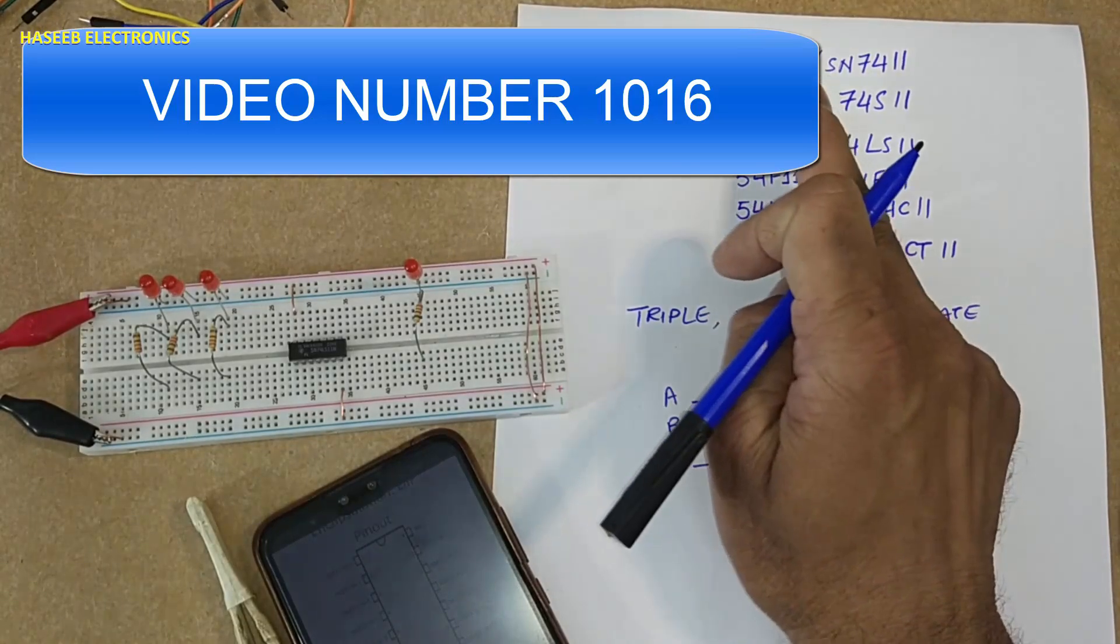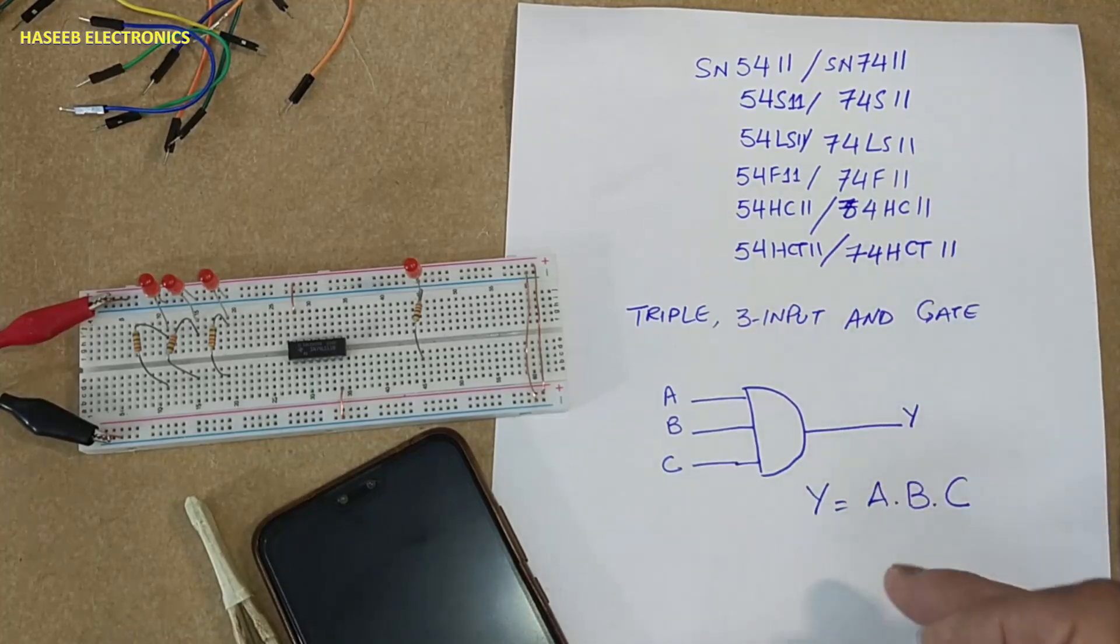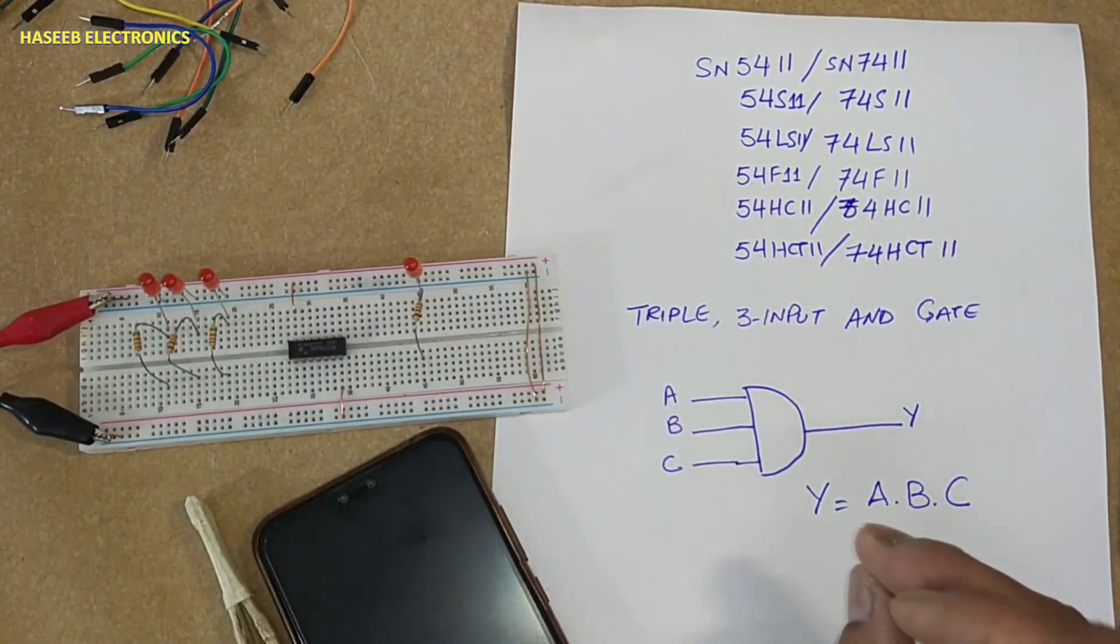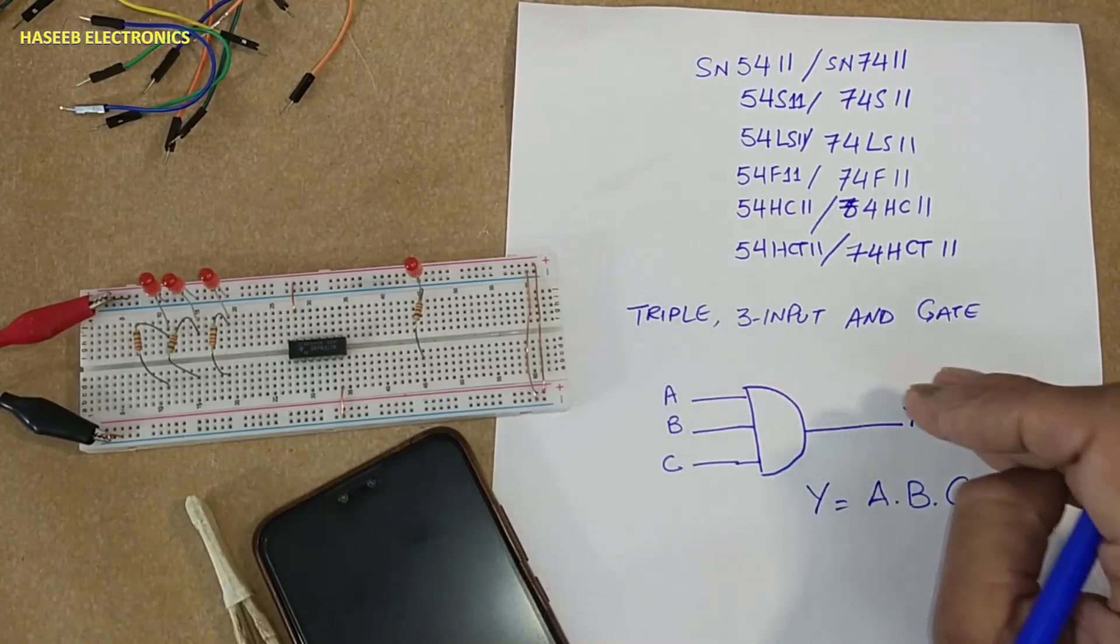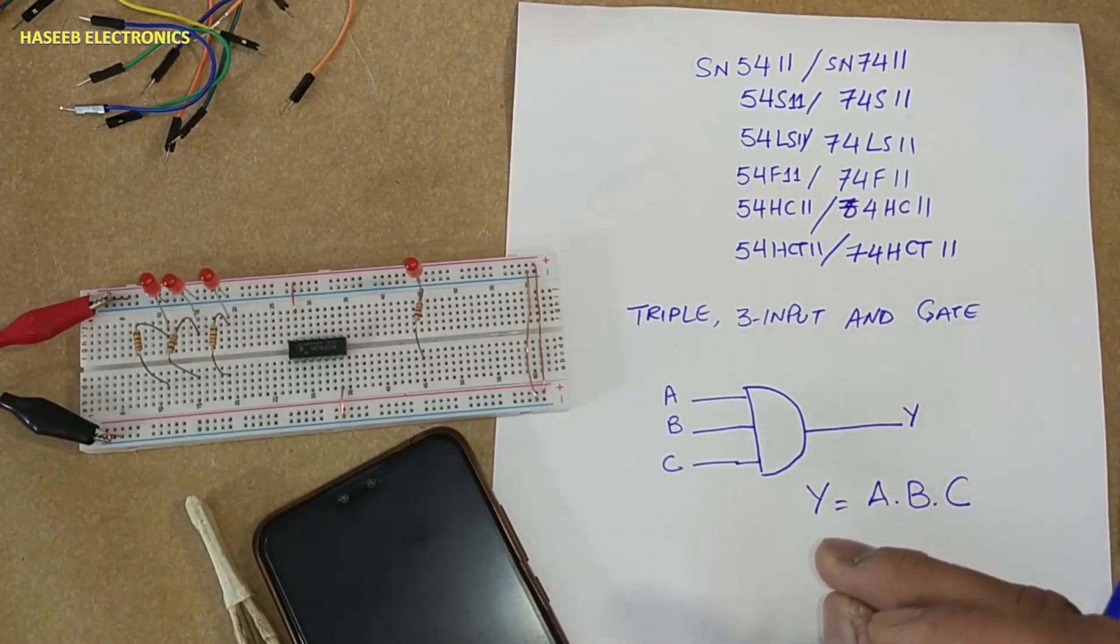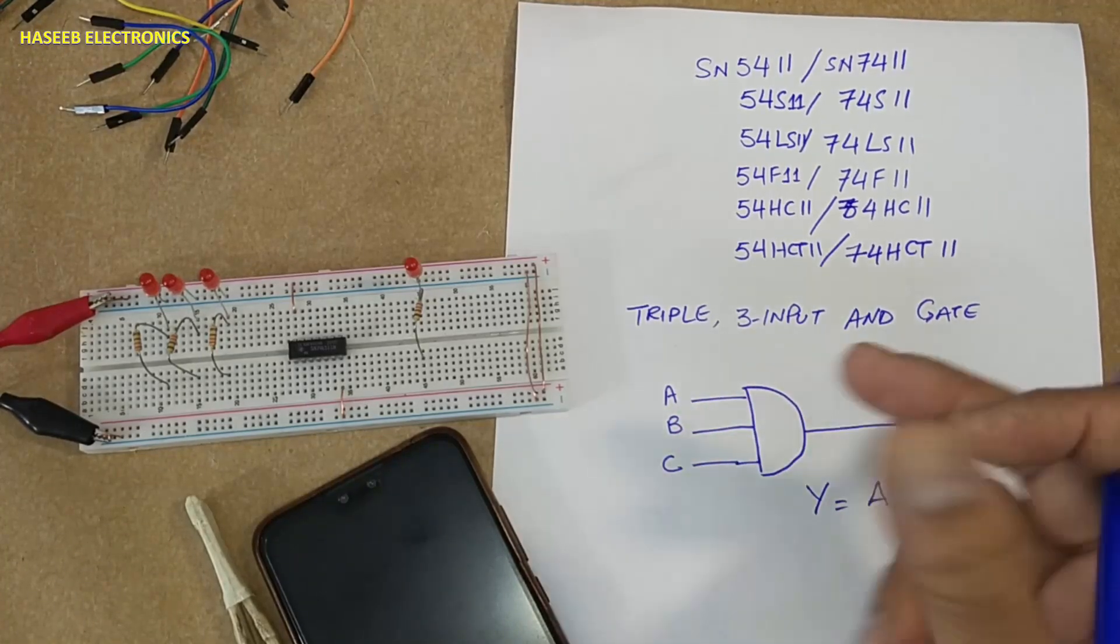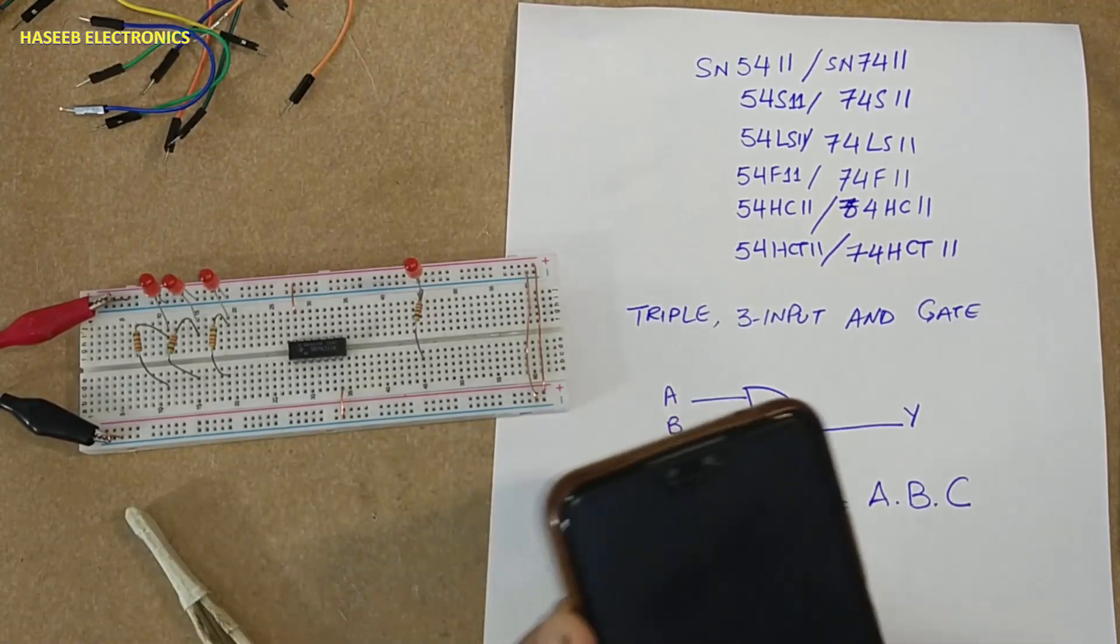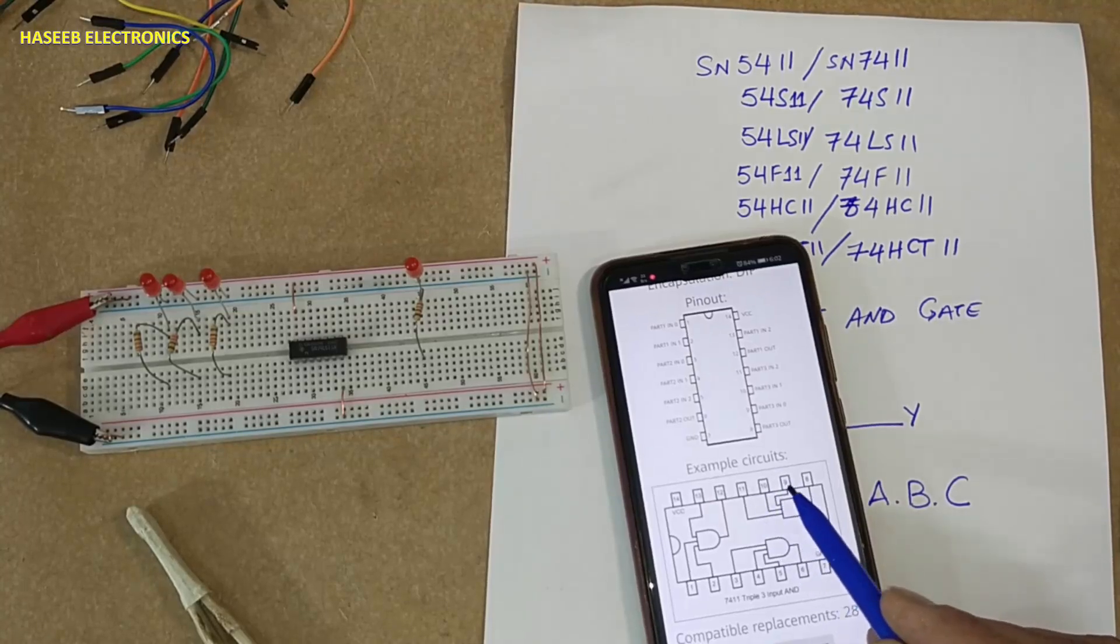For AND gate, if any input or all inputs are low, the output will be low. When all inputs are high, the output will be high. Let's check it practically. Pin 3, 4, 5 are inputs for the second gate, pin number 6 is output. 11, 10, and 9 are inputs, pin number 8 is output.